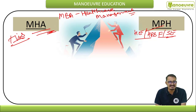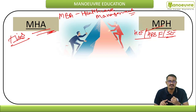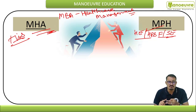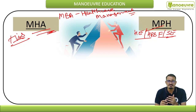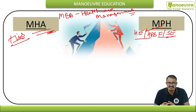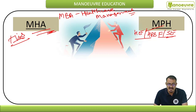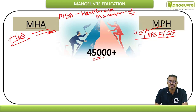The right candidates for these two courses are science graduates — BSc in Zoology, Botany, or Pharmacy, Nursing, BUMS, BHMS, BAMS, MBBS, MD, Physiotherapist, and so on. Basically, candidates from the medical sciences background are the ideal applicants.